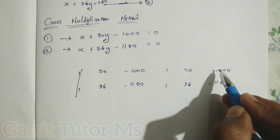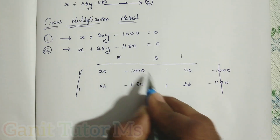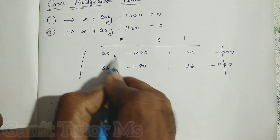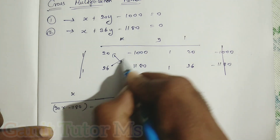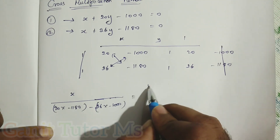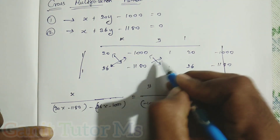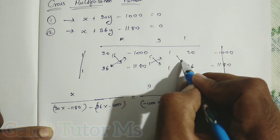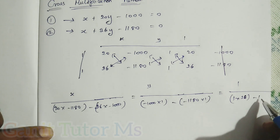We cancel the first and last columns of each row and write x, y, 1 in between the two rows. Then we write: x divided by cross multiplication of (20 × −1180) minus (26 × −1000), equal to y divided by cross multiplication of (−1000 × 1) minus (−1180 × 1), equal to 1 divided by (1 × 26) minus (1 × 20).